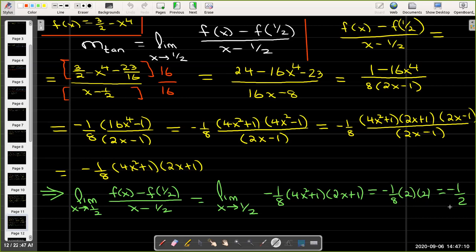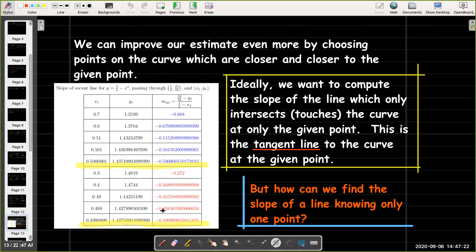So we can say that the rate of change of y with respect to x at that point is negative 1/2. Now our numerical approximation was very close. Whether we approach from the left or from the right, we got a little bit off from negative 1/2, but we'd like to know the exact value. That was the equivalent to finding the slope of a line knowing only one point, and now we can answer that.